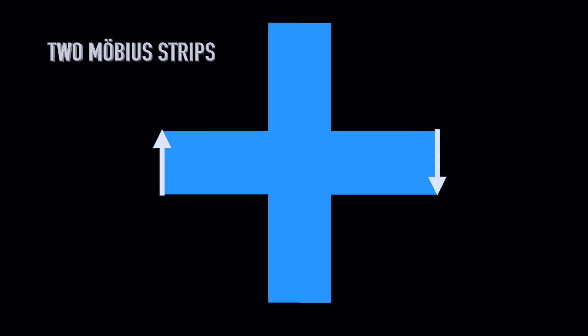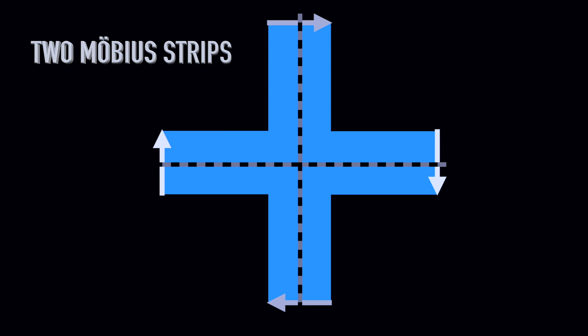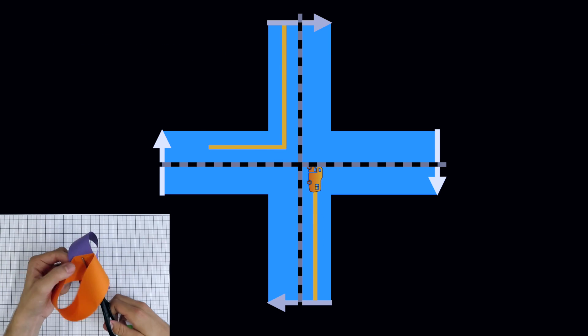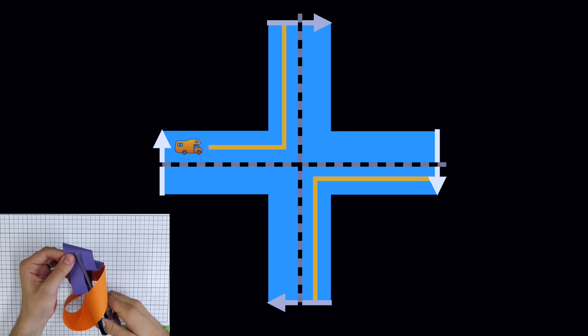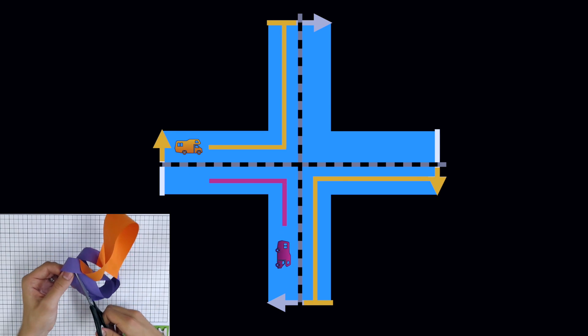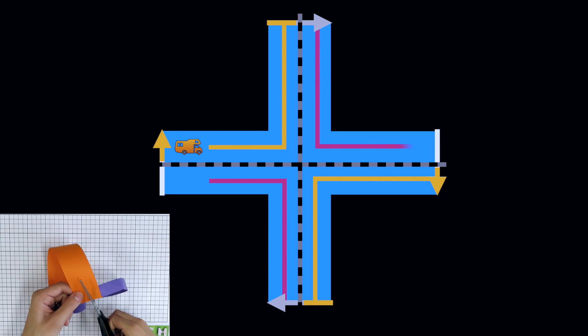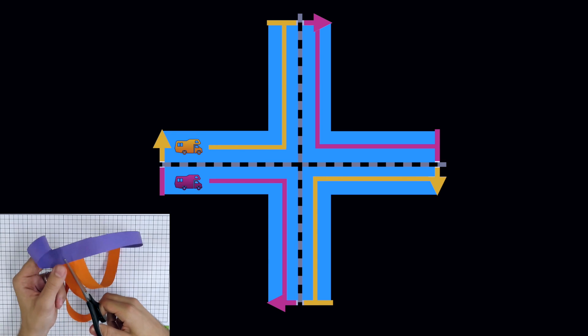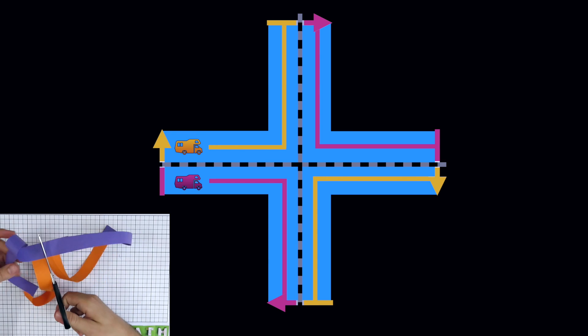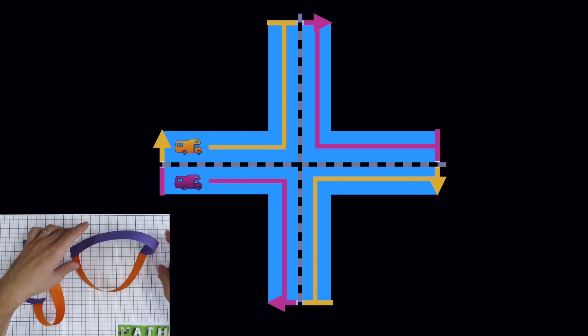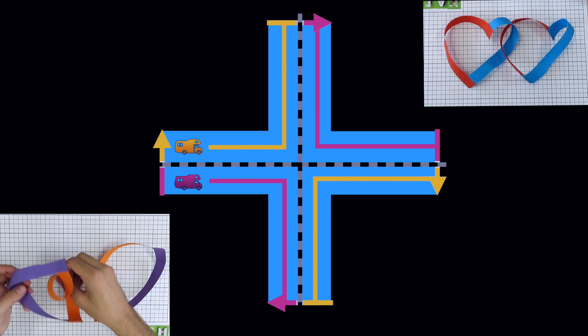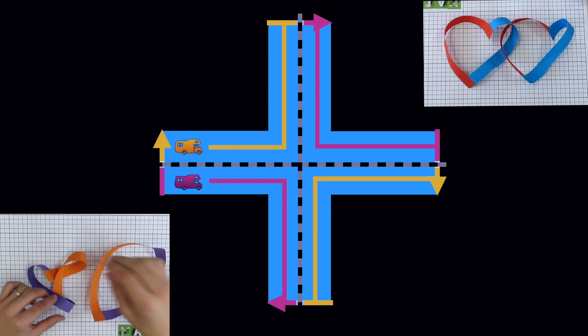With two Möbius strips the situation is different, because we can reach only one half of the strips with each van. Therefore, there will be two separate pieces after cutting. Here we can see a limitation of our model. Since it does not distinguish between the two types of Möbius strip, it cannot determine whether we get the boat and the weird strip thing, or the two hearts interlocked together.